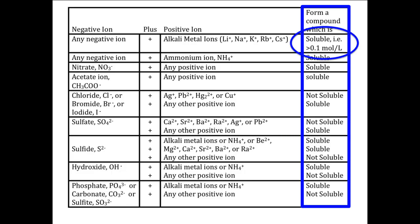That is, a compound is soluble if its solubility is greater than 0.1 molar and not soluble if its solubility is less than 0.1 molar. This sounds like a rather arbitrary division, and it is in one sense, but not in another sense. There is usually a very wide gap between those substances that are soluble and those that are not, with soluble substances nearly always having solubility greater than 1 molar and not soluble substances having solubility much less than 0.01 molar. So the choice of 0.1 molar is within this gap and makes sense.